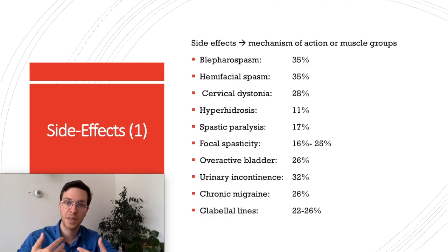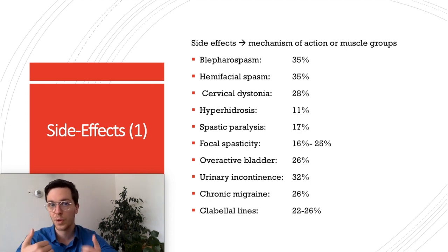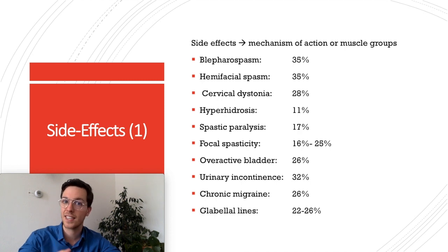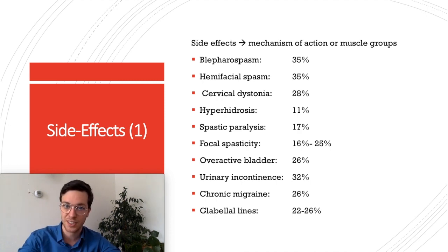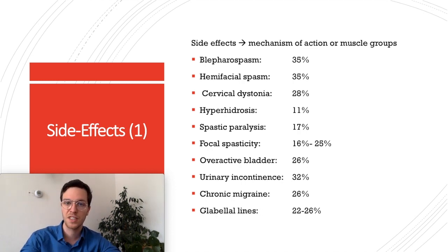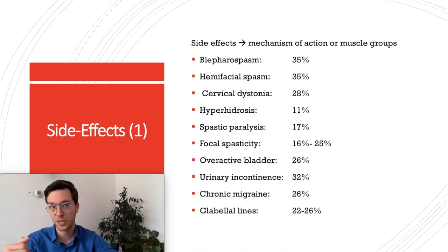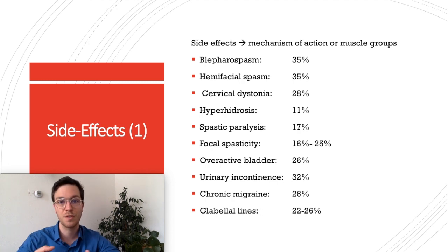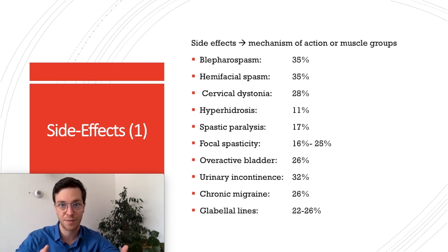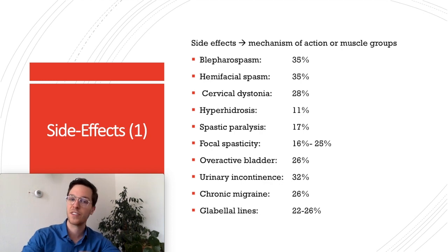The use of Botox can have many side effects, but those side effects depend on the muscle group where the Botox is injected. A list of side effect chances by indication is provided — for example, if you use Botox for blepharospasm, you have a 35% chance of side effects; similarly for hemifacial spasm. You can pause this slide to check the percentages.